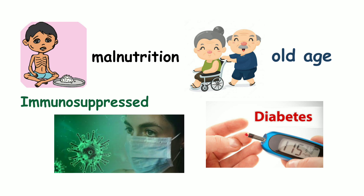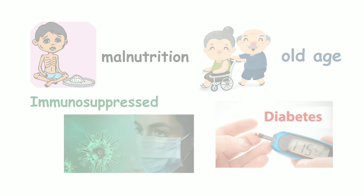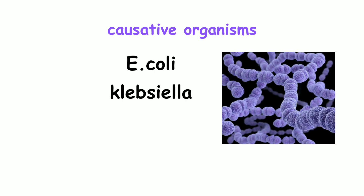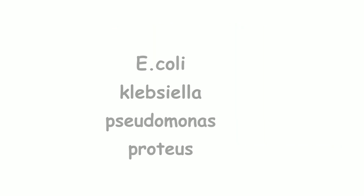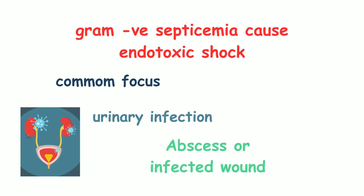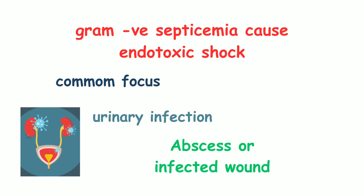It is also seen in immunosuppressed people. Common bacteria are E. coli, Klebsiella, Pseudomonas, and Proteus. Gram-negative septicemia causes endotoxic shock. Common foci of Gram-negative sepsis are urinary infection, abscess, infected wounds, biliary sepsis, and postoperative wounds.